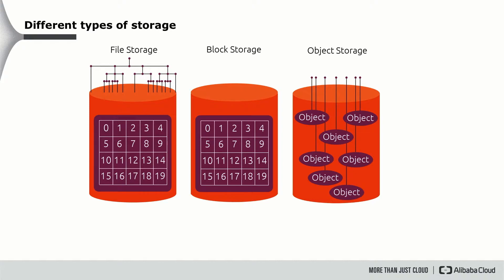The two most popular shared file system protocols in use today are NFS and SMB. Block storage provides network access to the equivalent of raw block devices. A client machine connects to a specific volume on the storage service and formats it as if it were a local block device. To use block storage, you need to first mount it to your OS, then format it to the supported format.